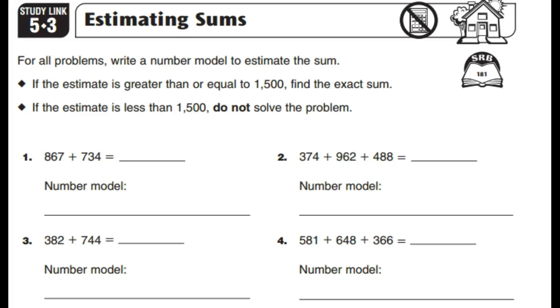Then it goes on to say, if the estimate is greater than or equal to 1,500, find the exact sum. And if it's less than that, then you don't have to solve the problem exactly.